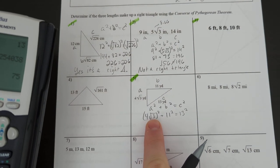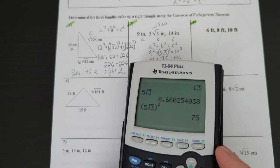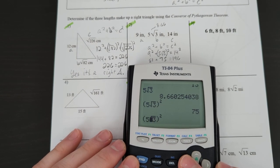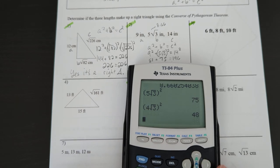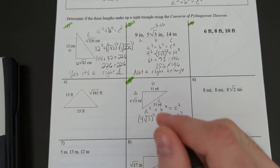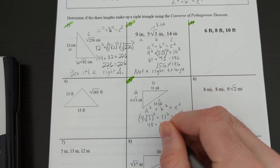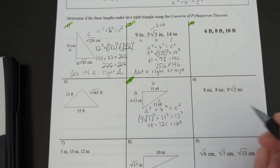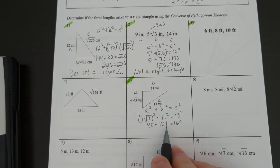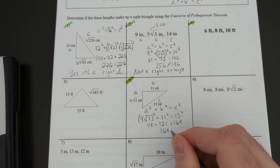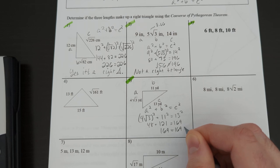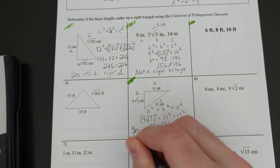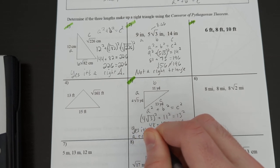So typing in 4 root 3 squared. It's actually the same as this one, except the 5 gets replaced with a 4. I got 48 with my calculator. 11 squared is 121. 13 squared is 169. 48 plus 121 is 169. So guess what? This is a right triangle. Yes, it's a right triangle.